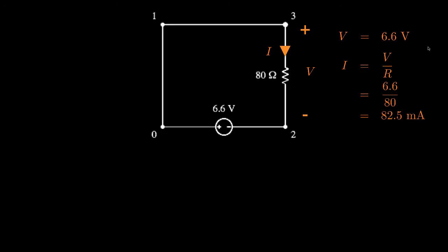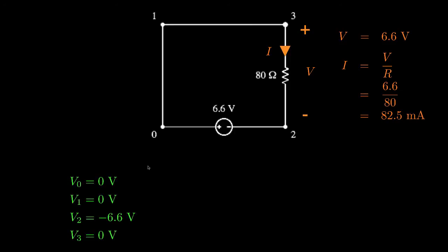Then we can use Ohm's law to solve for the current through the resistor, which is the ratio of the voltage, 6.6 volts, to the resistance, 80 ohms. This gives us a value of 82.5 milliamps for the current. Now, if we set node 0 as our reference and give it a voltage of 0 volts, then the voltages at nodes 1 and 3, which are connected directly to node 0 by a wire, will also be 0. And because the voltage source provides a voltage increase of 6.6 volts from node 2 to node 0, the voltage at node 2 relative to node 0 is negative 6.6 volts.